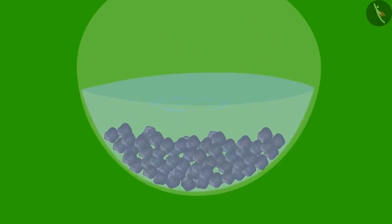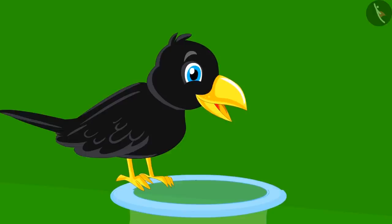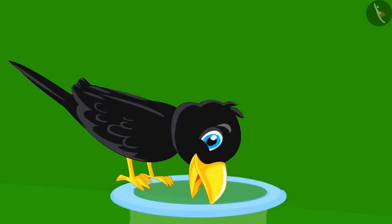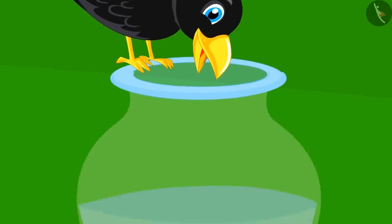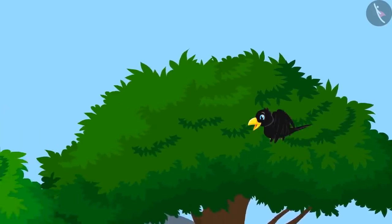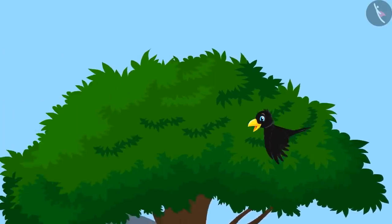The crow put these 36 stones in the pitcher and he was happy to see the water level rising up. He immediately inserted his beak into the pitcher and tried to drink the water. But the water was still very low. The crow left again in search of more stones.